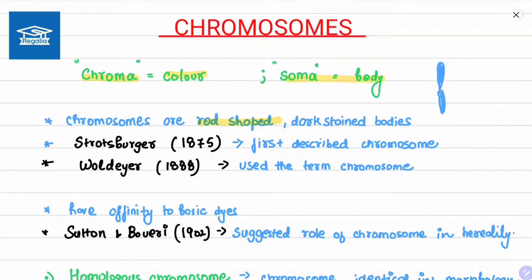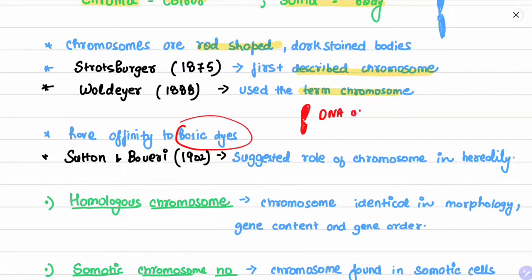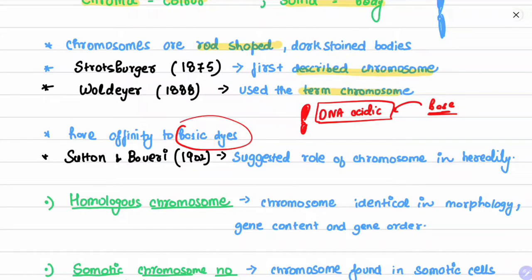Strassburger in 1875 first described chromosomes, and Waldeyer used the term 'chromosome.' Chromosomes have affinity for basic dyes because chromosomes are essentially an aggregation of DNA material, and DNA is acidic in nature. Since DNA is acidic, it has affinity for bases, and therefore chromosomes have affinity for basic dyes.